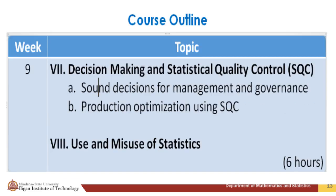The seventh and last topic will be on decision making and statistical quality control (SQC), where sound decisions for management and governance, production optimization using SQC, and the use and misuse of statistics will be discussed.